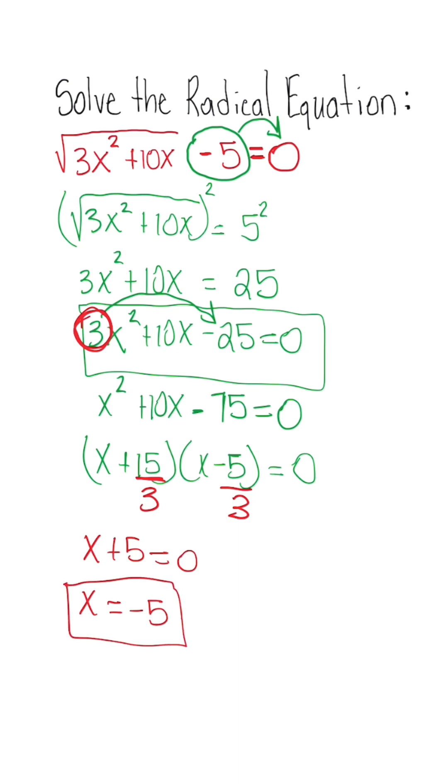For the second factor, because we don't get a whole number when we divide 5 by 3, we're going to take 3 and put it in front of the x. So we have 3x minus 5 equals 0. We add 5 on both sides to get 3x equals 5. Once we divide, we get x equals 5 over 3 as our second solution.